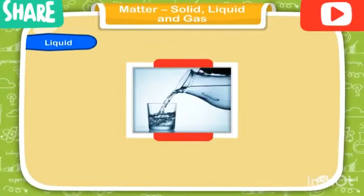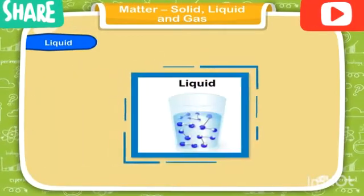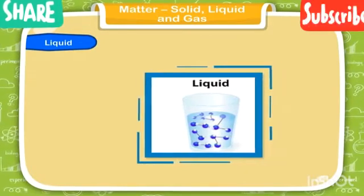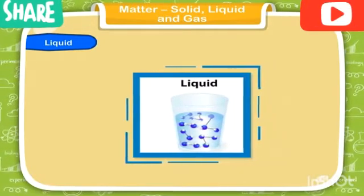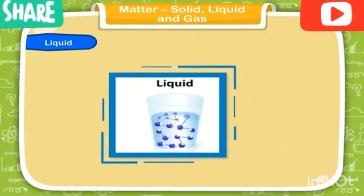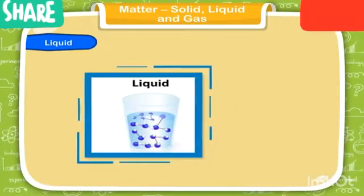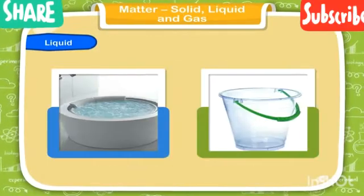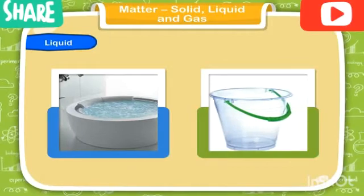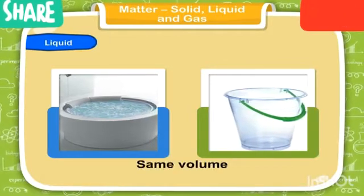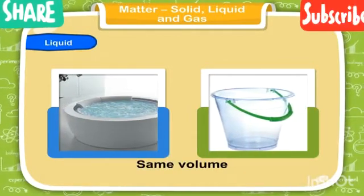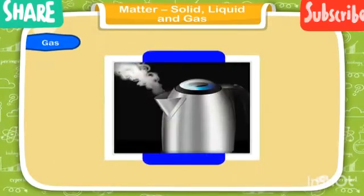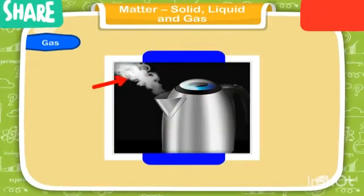If you pour some water in a glass, it will take the shape of the glass. In liquid, the molecules are loosely packed and have space between them; the molecules can move around a little freely. Liquids have a fixed volume — one liter of water remains one liter whether you pour it in a bucket or a tub.